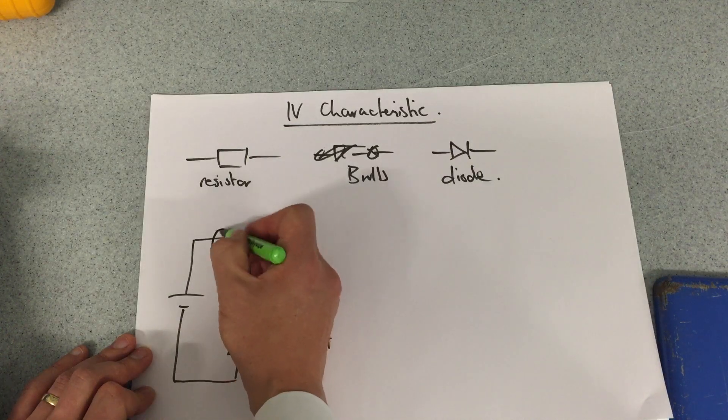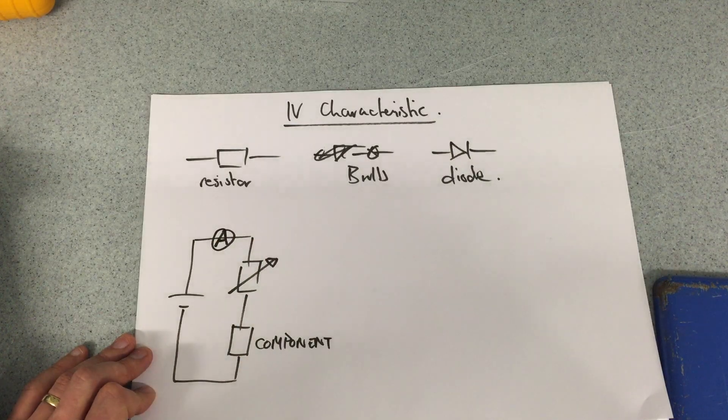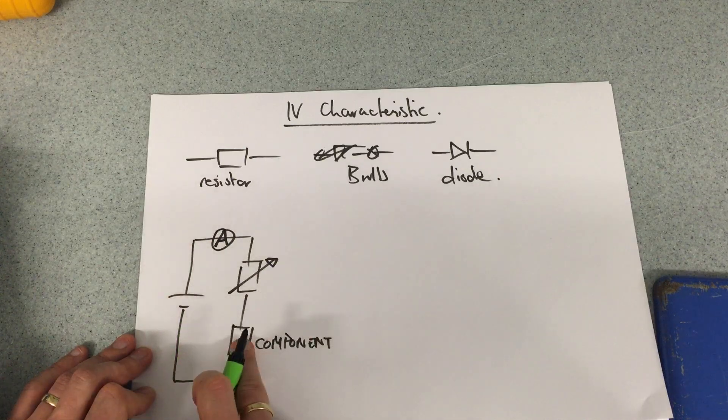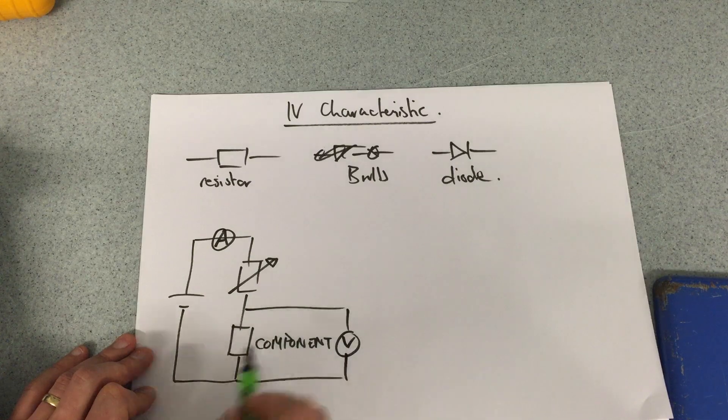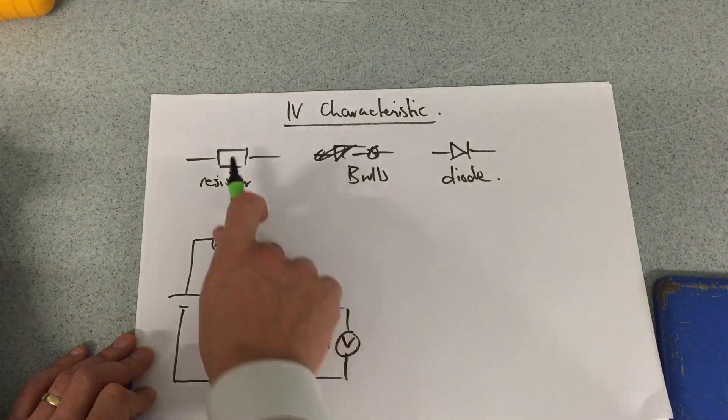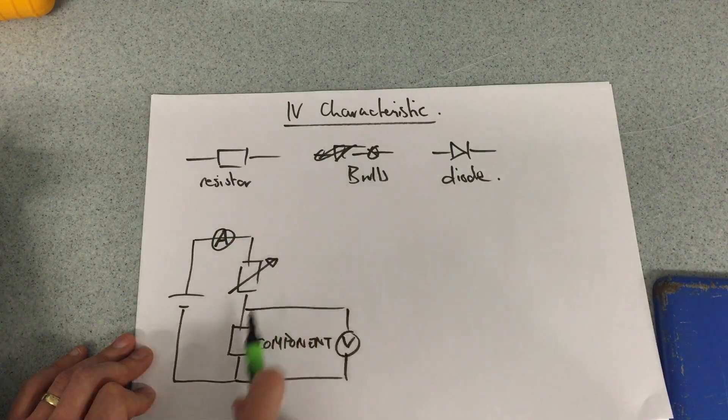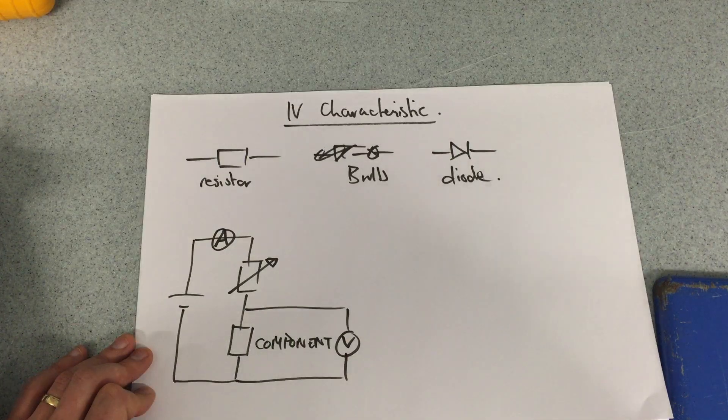I'm looking to measure the current in this circuit knowing the current is the same through both components. And I'm looking to take the voltage about the component. So this could be either the resistor, which in this case could be the bulb, or it could be the diode placed in that position.